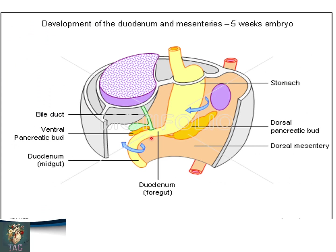In this diagram you can also see the ventral mesogastrium, and within the ventral mesogastrium the developing liver divides it into two parts: anterior to the liver, attaching the liver to the anterior abdominal wall, is the falciform ligament, and the part attaching the liver to the stomach is the lesser omentum. Similarly the dorsal mesogastrium is shown, within which the dorsal pancreatic bud is developing, and this is the area of the spleen. Here you can see the duodenum which is also rotating and taking its final position.